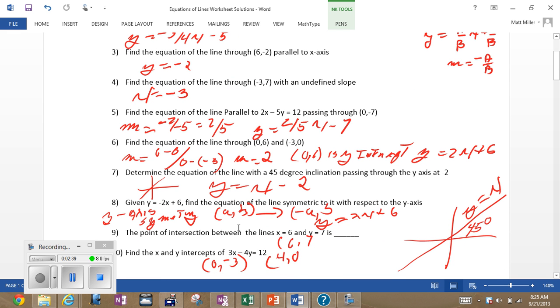We reference number seven to this picture over here. An inclination of 45 degrees is a line with slope one. So if it's a line with slope one, and it's passing through the Y-intercept of negative two, there's your equation.